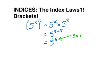We can see here that this question means 5 cubed times itself because it is squared. So here, when we multiply indices, we add powers. We will get 5 to the power of 6.